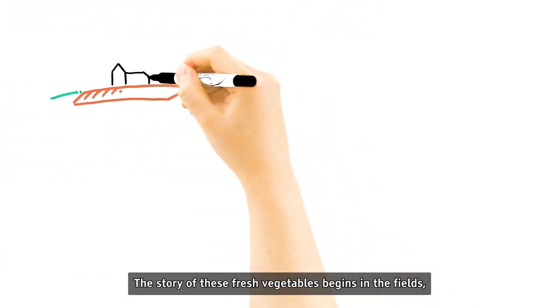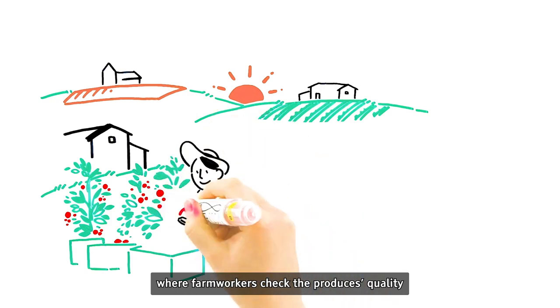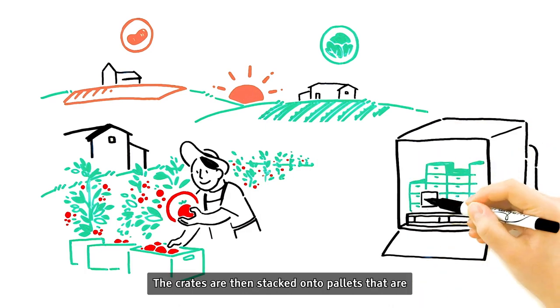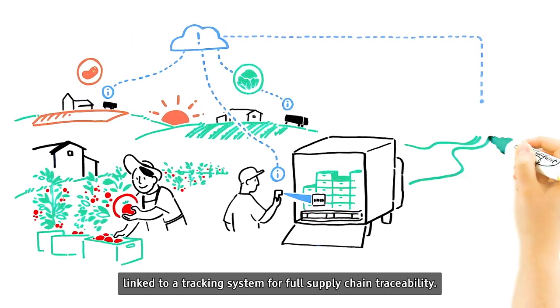The story of these fresh vegetables begins in the fields, where farm workers check the produce's quality and place them carefully into crates. The crates are then stacked onto pallets that are linked to a tracking system for full supply chain traceability.